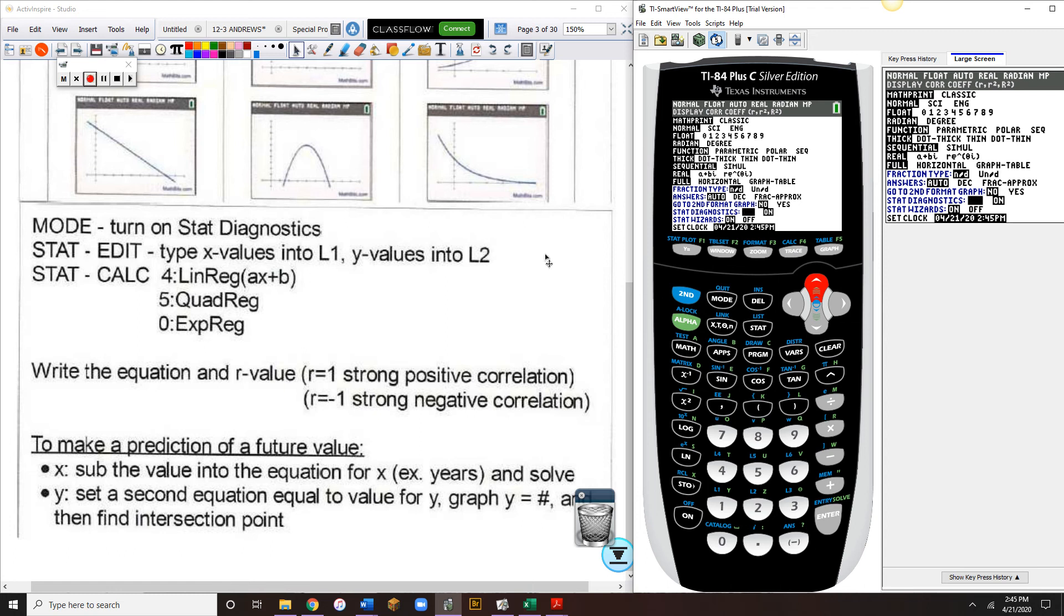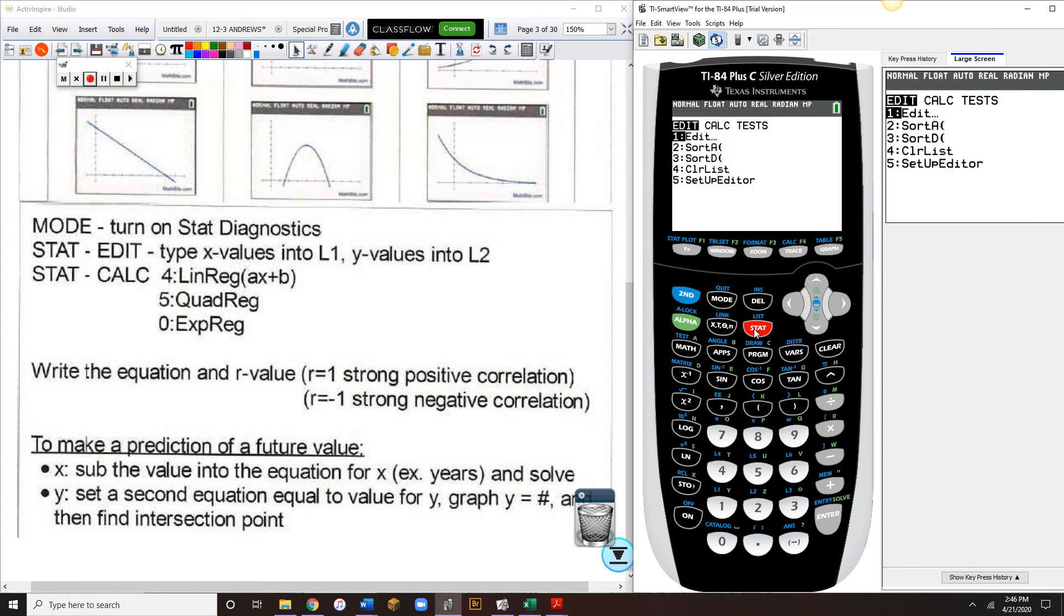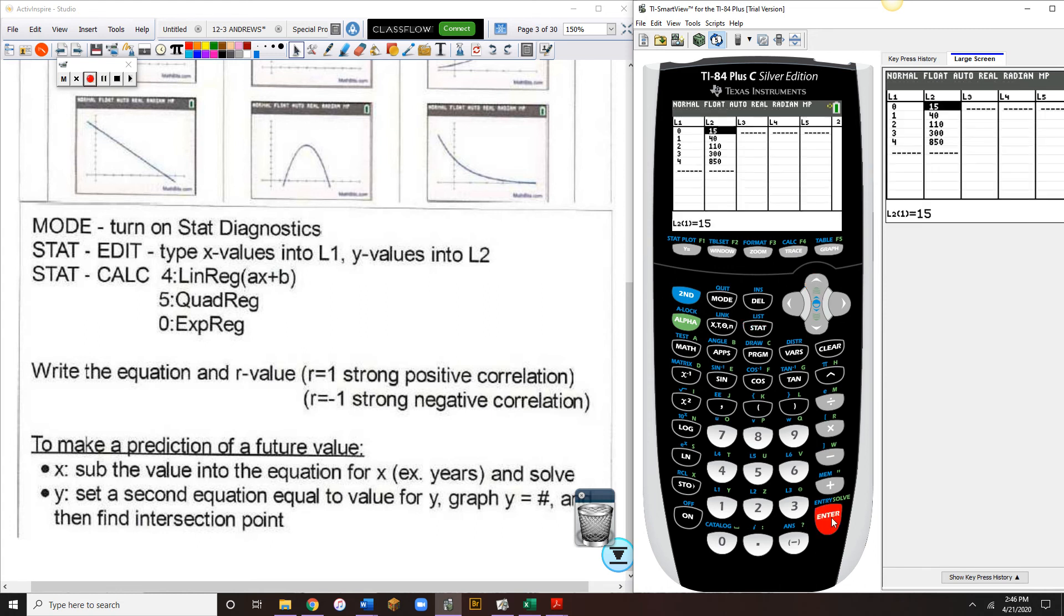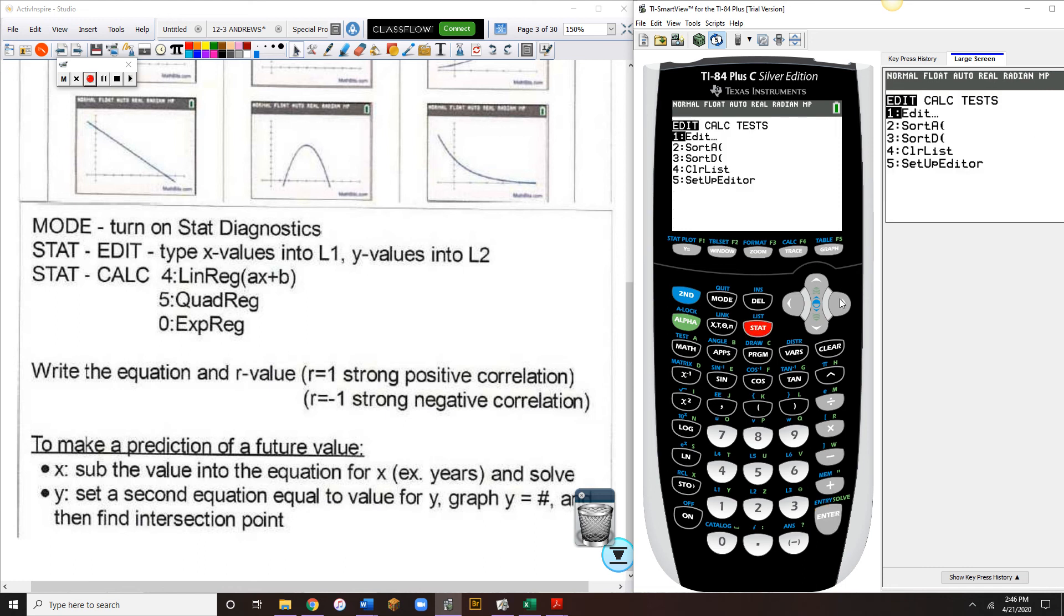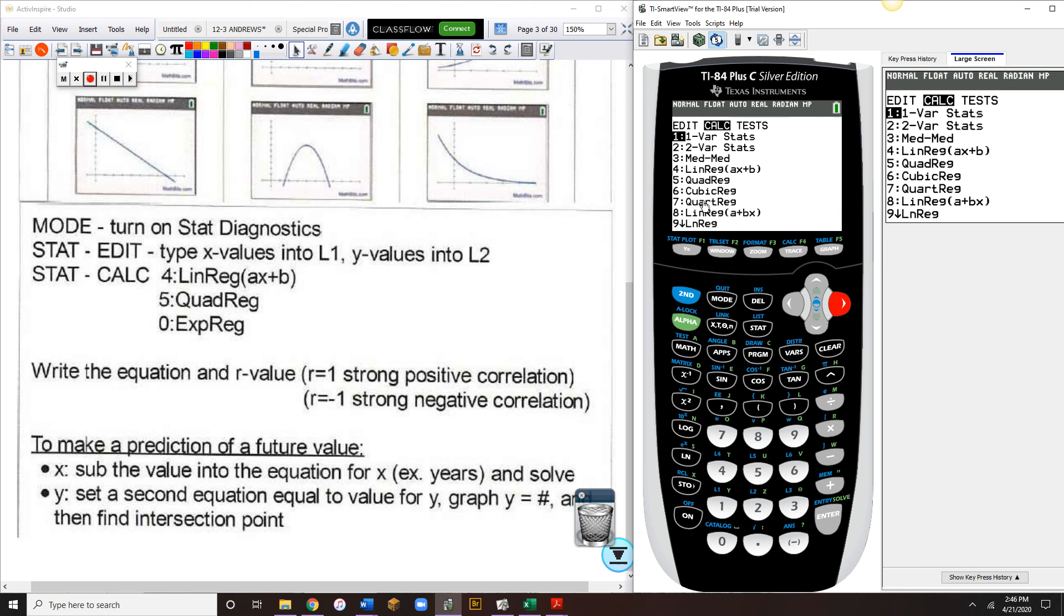The basic calculator functions we will be using are stat and edit. I already have some data in here, and then stat and calc, and the options we'll be using out of that menu are 4 for linear regression, 5 for quadratic regression, and 0 for exponential regression.